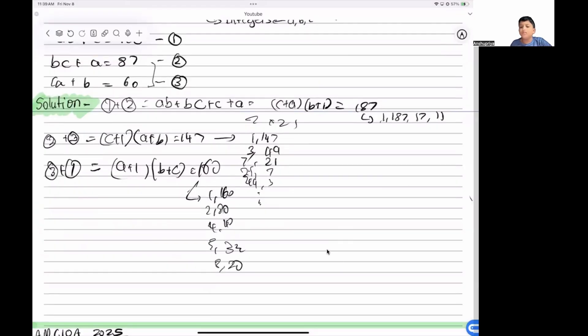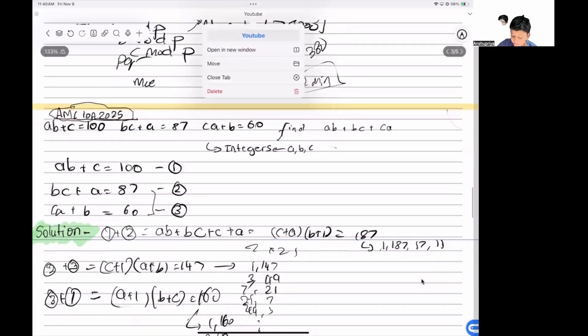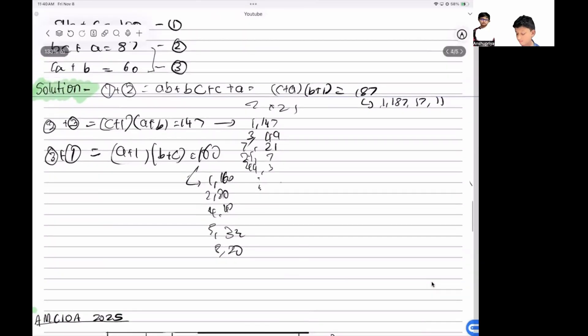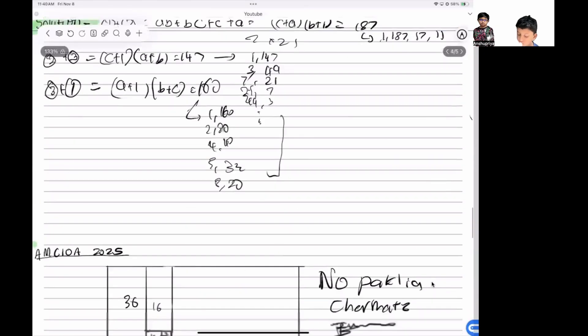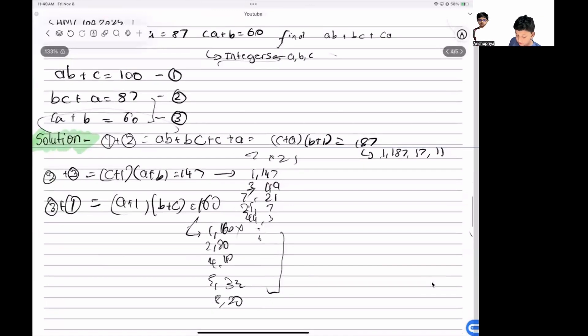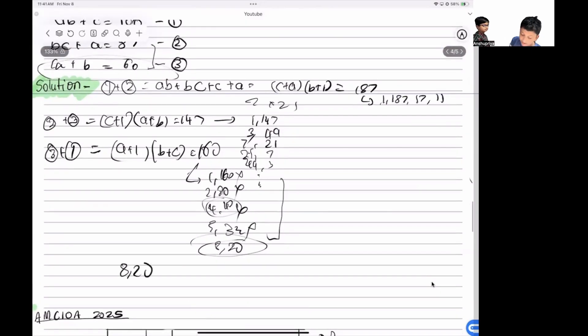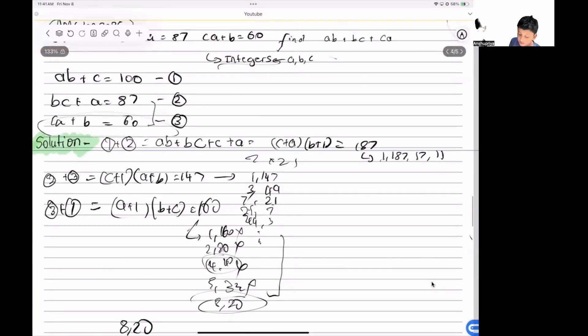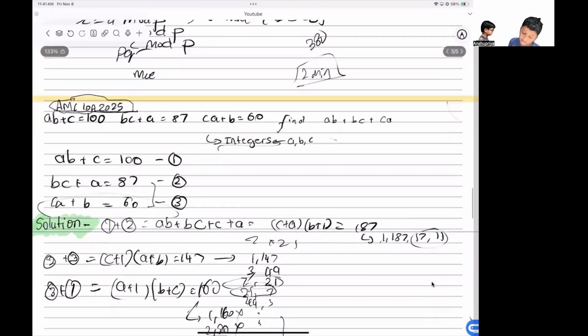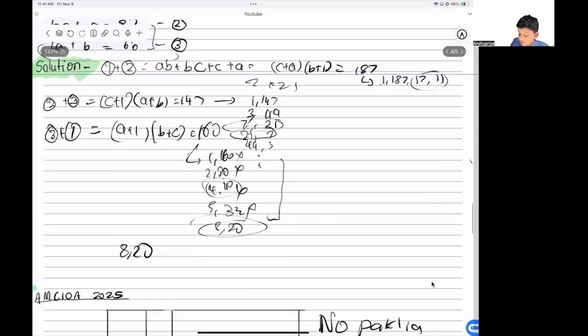Now since our minimum value is 60, it cannot be 160, 80, 40, or 32, so we will only have this case 8 × 20. Similarly, we will only have the smallest case 7 × 21 and 11 × 17. Since we will not get any solution for positive values, we will only get negative solutions.